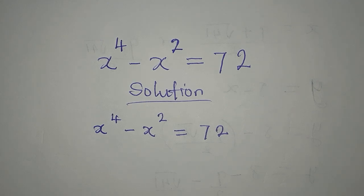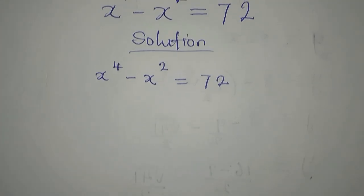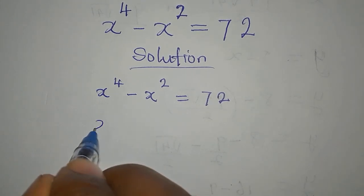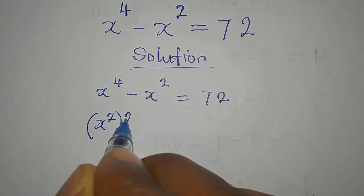Okay, and here is what we are going to do. So x to the power of 4 is the same thing as x to the power of 2 to the power of 2.